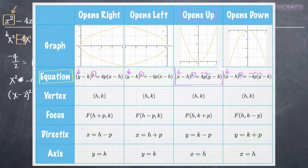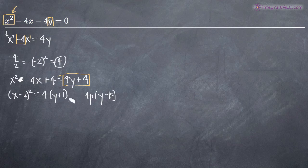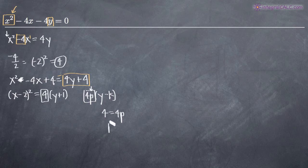We need to get our equation into the standard format: x minus h squared equals 4p times the quantity y minus k. We already have x minus 2 squared on the left. Looking at the right side, we have 4p times y minus k. Since we have y plus 1, we know k equals negative 1. We set 4 equal to 4p and divide both sides by 4 to find that p equals 1.